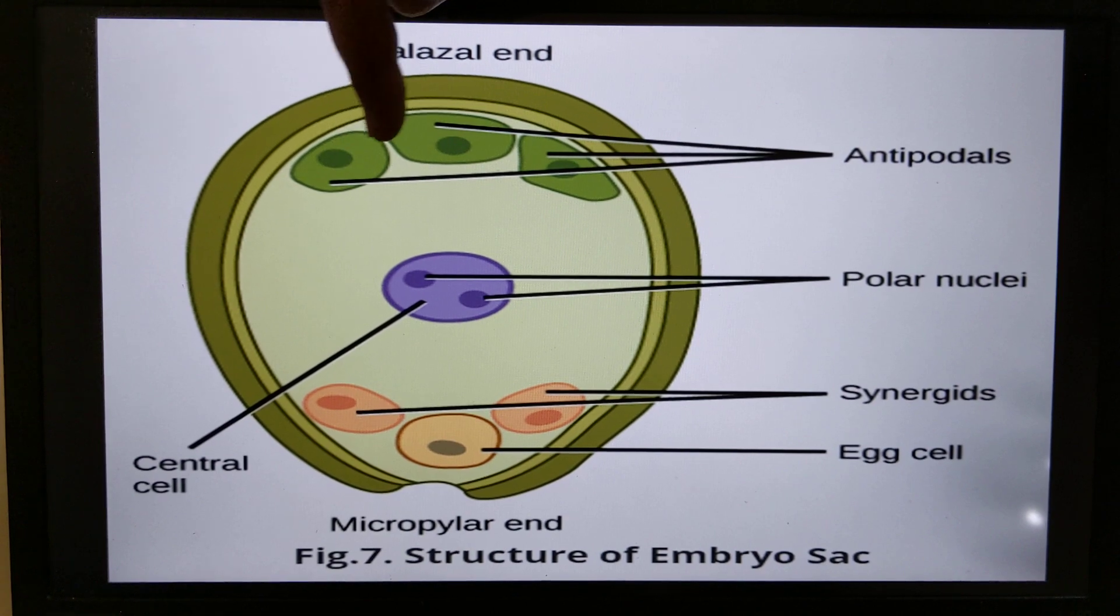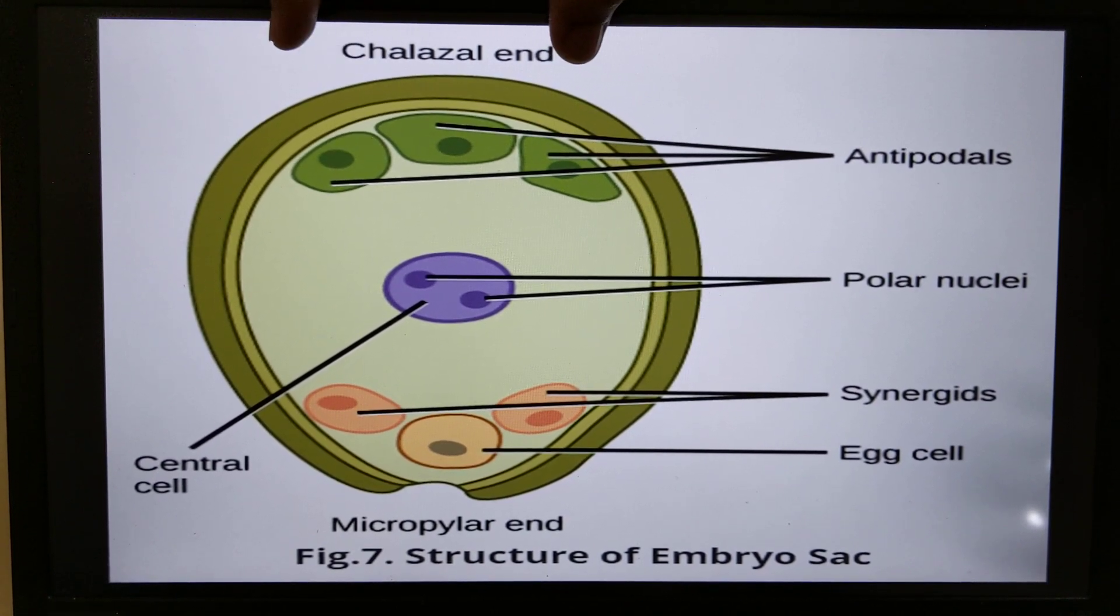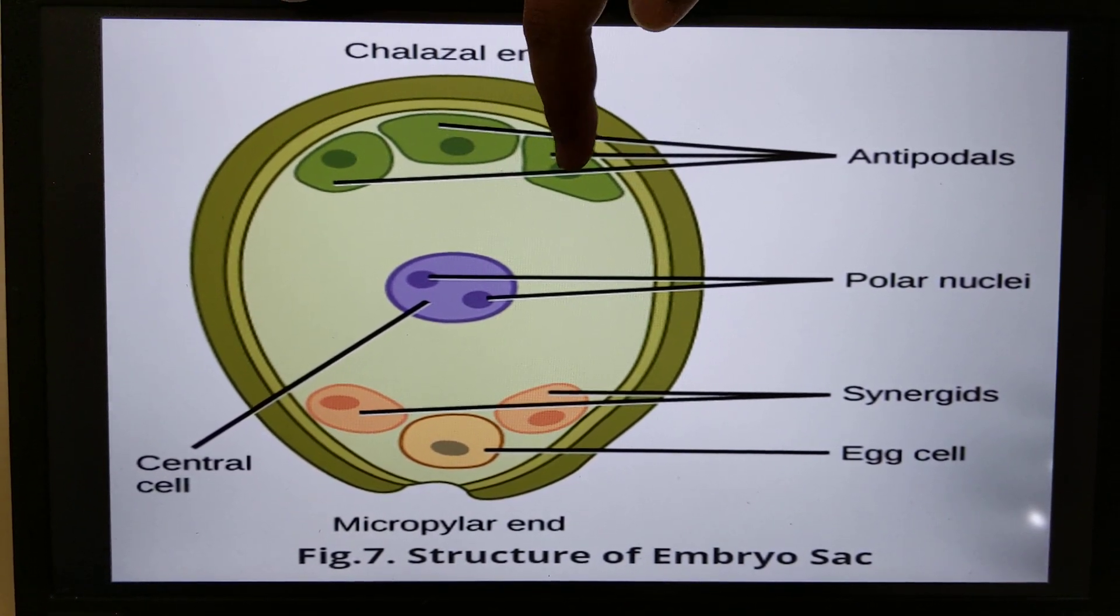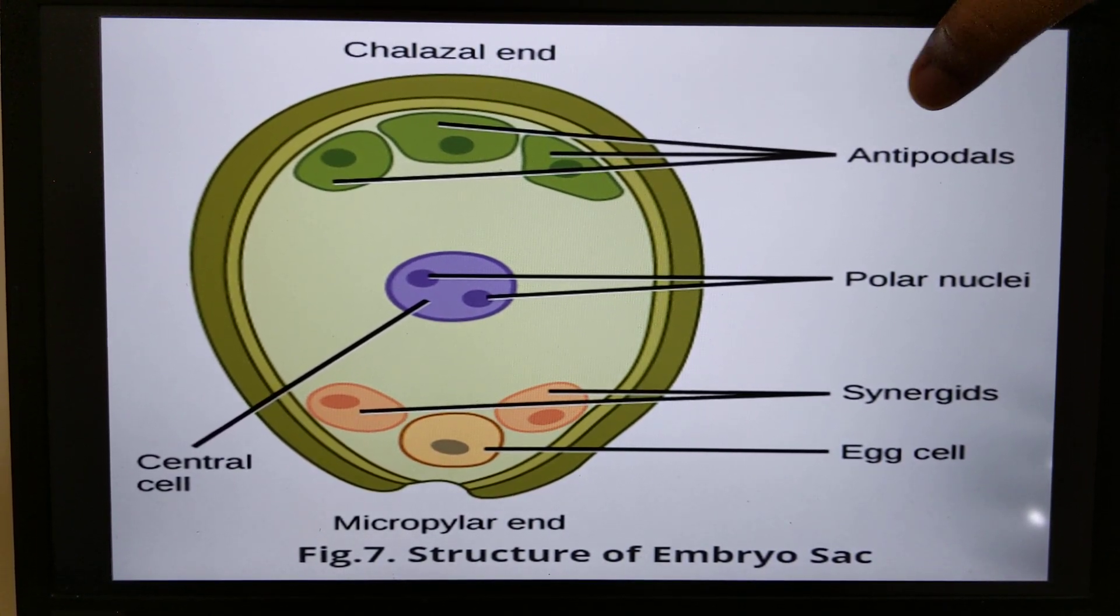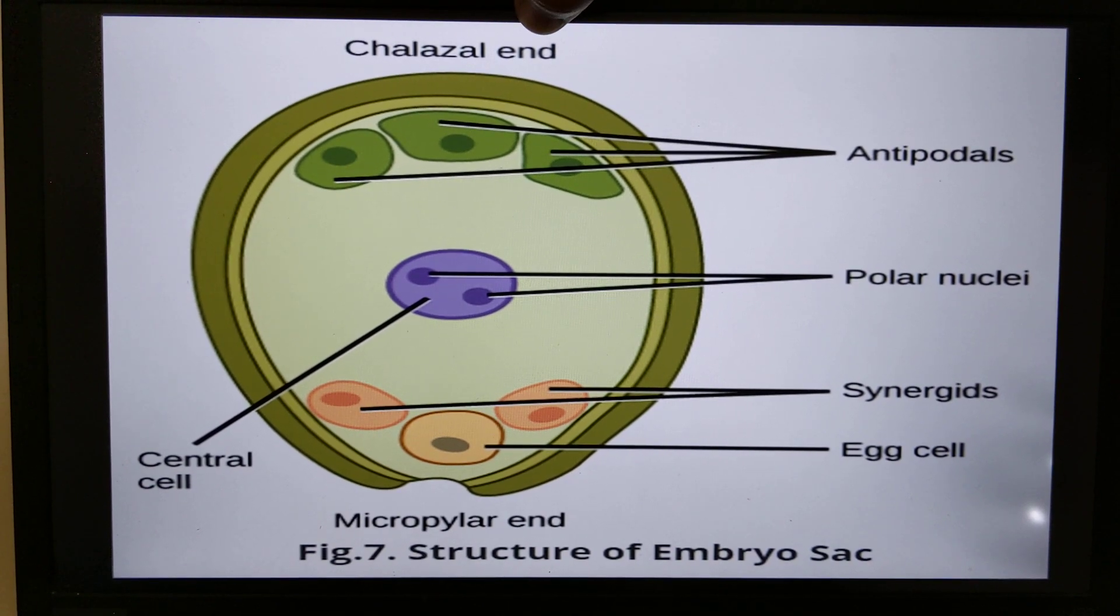The cells which are present towards the chalazal end, there are 3 cells: 1, 2, 3. They are called antipodals. The antipodals are present towards the chalazal end.